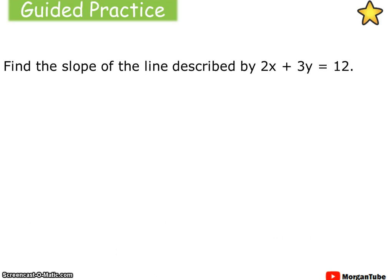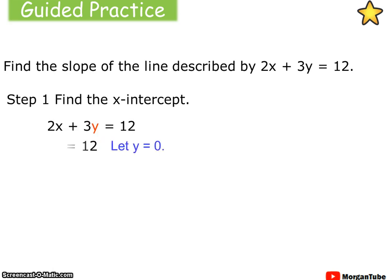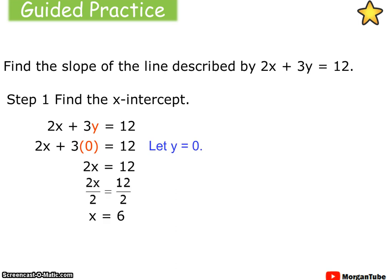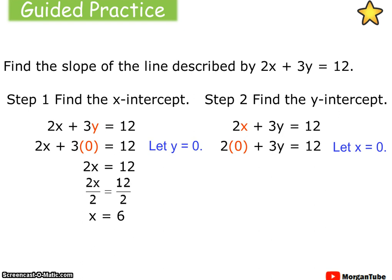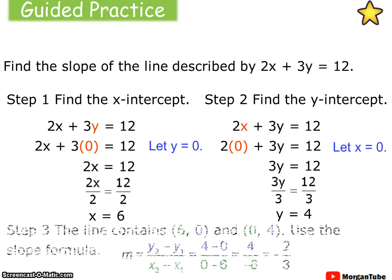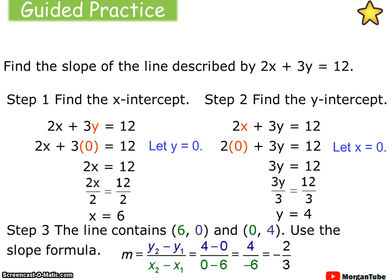You guys try it. Use the slope formula and the intercept method to find the slope of 2x plus 3y equals 12. Pause your video now. Welcome back. We first find the x-intercept by letting y equal 0 — so x is 6. We find the y-intercept by letting x equal 0 — and we find that y is 4. So given those two ordered pairs, (6, 0) and (0, 4), we can plug them into the slope formula. That gives us a slope of negative 2 thirds.